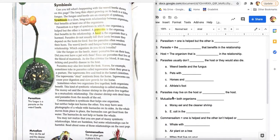We're going to start looking at some examples here. Like the fungus on the beetle, many parasites live on their hosts. Did you ever have a pet with fleas? B in your notes. Fleas are parasites that live off the blood of mammals. As the flea obtains the blood, it can cause itching and possibly disease in the host. That's why there's a lot of medication out there to try to keep your pets safe from fleas.